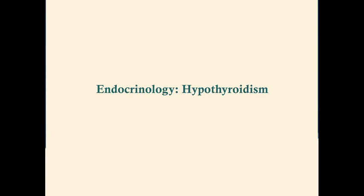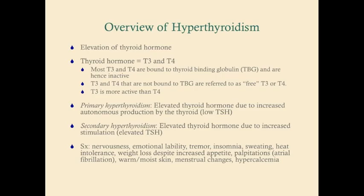This talk is about hyperthyroidism. Hyperthyroidism is an elevation of thyroid hormone, which comes in two forms: T3 and T4. Most T3 and T4 in the bloodstream is bound to thyroid binding globulin (TBG) and is therefore inactive. Free T3 and free T4, which are not bound to TBG, are biologically active. T3 is approximately three to four times more active than T4.